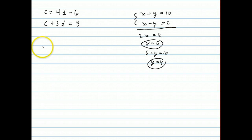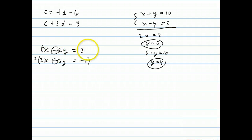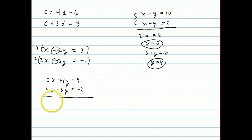Sometimes elimination requires extra work. For x plus 2y equals 3 and 2x minus 3y equals negative 1, you can't just add them directly. Multiply the top equation by 3 and the bottom by 2 to get 3x plus 6y equals 9 and 4x minus 6y equals negative 2. Adding gives 7x equals 7, so x equals 1, and plugging back in gives y equals 1.